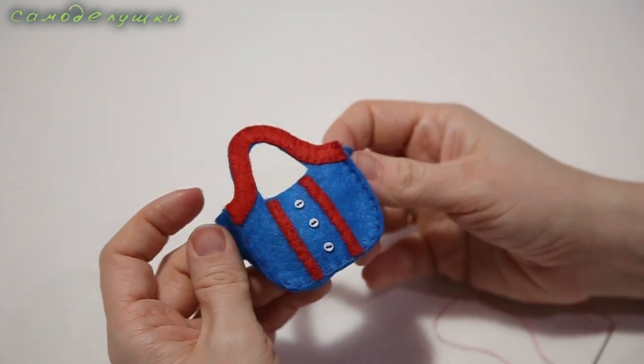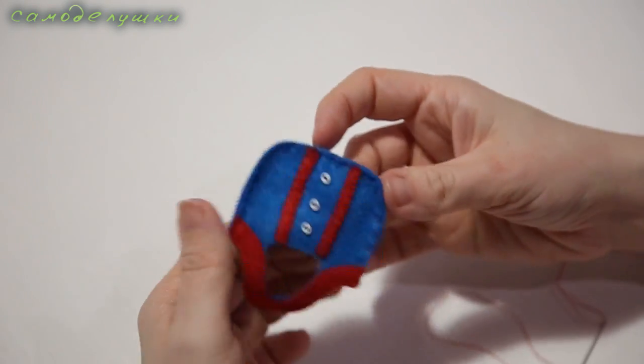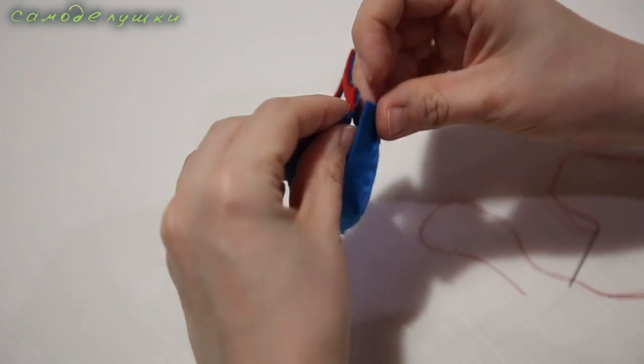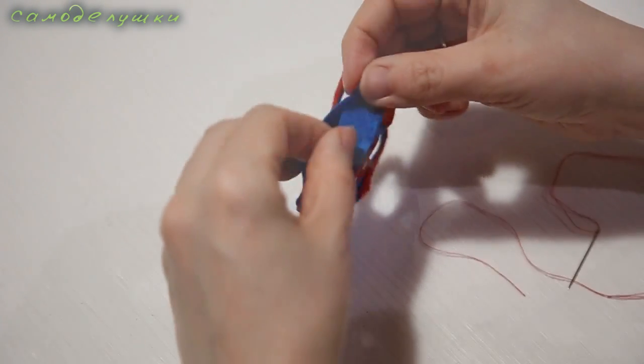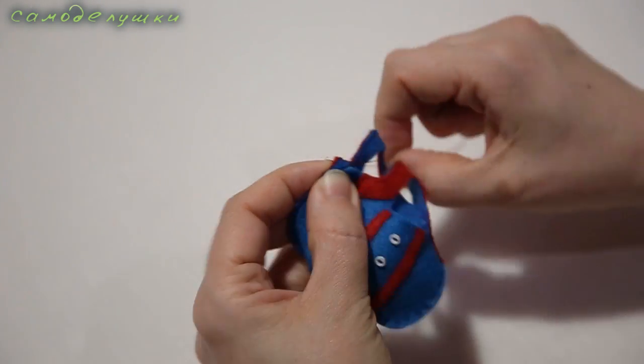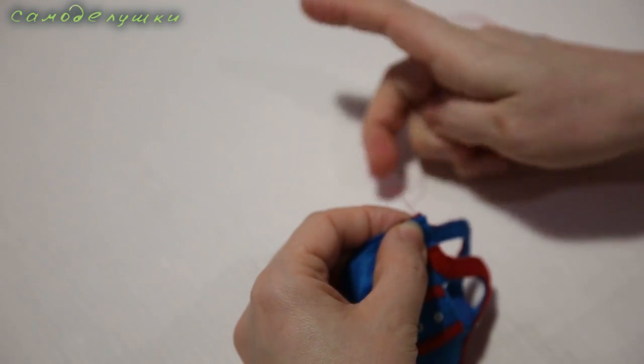This is what the sewn piece looks like. Now we need to sew it to the other part of the bag. In the same way we leave the knot in the middle of the work and sew with small stitches.